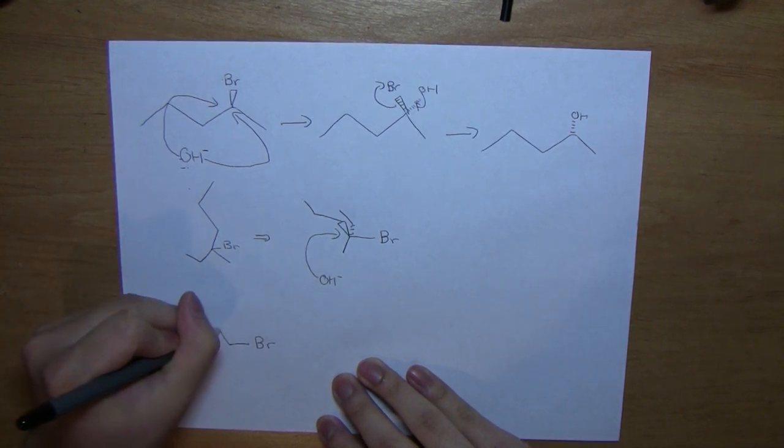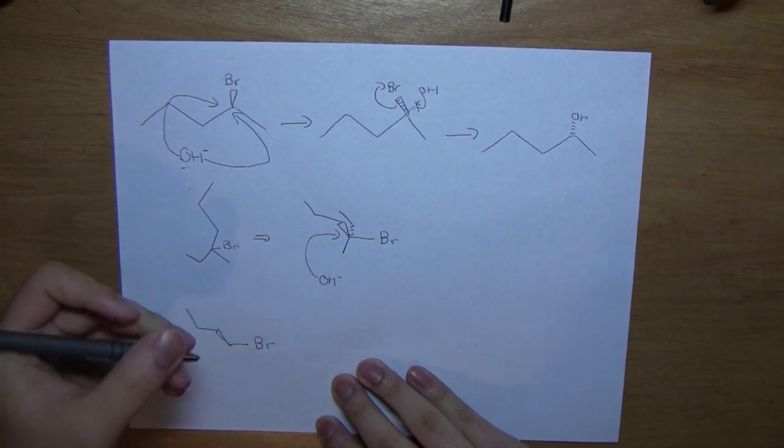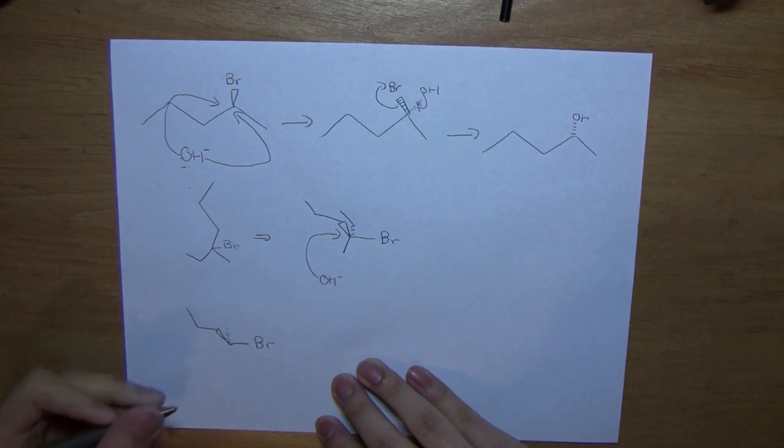We have the propyl group coming out of us, out of the paper, and the methyl group coming into the paper. And then we have a hydrogen here. Now, this is important.